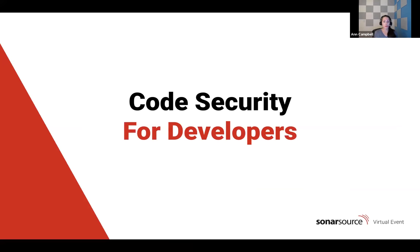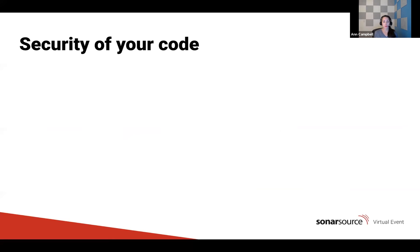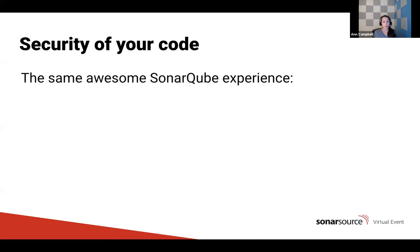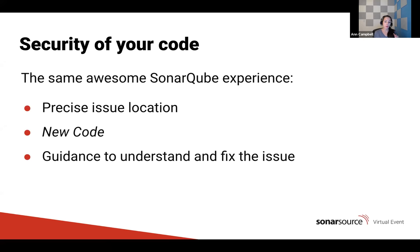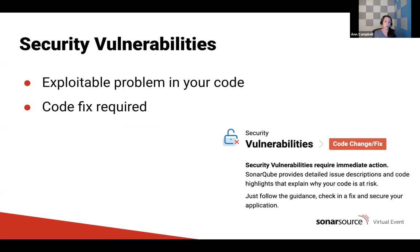So that's what we're talking about: code security for developers. When we do this, we give you the same awesome SonarCube experience that you've come to know and love. You get precise issue locations, secondary locations when required. We raise issues in new code so you can find and fix them as soon as possible after they're written. And when we raise an issue, we give you guidance to help you understand and fix it. We do this for security vulnerabilities, so when we raise one on your code, you know it's an exploitable problem and a code fix is required.